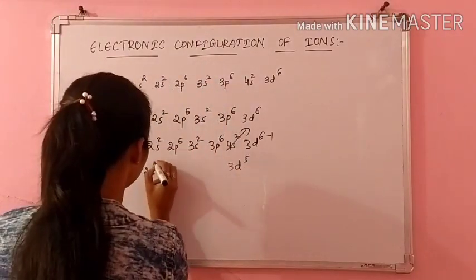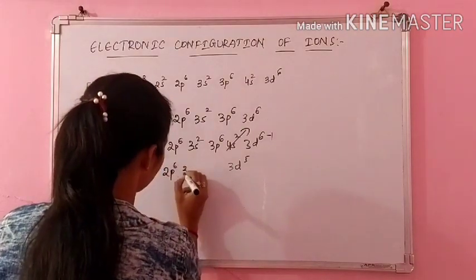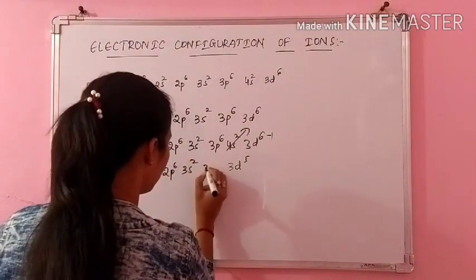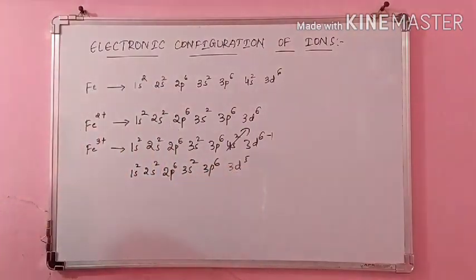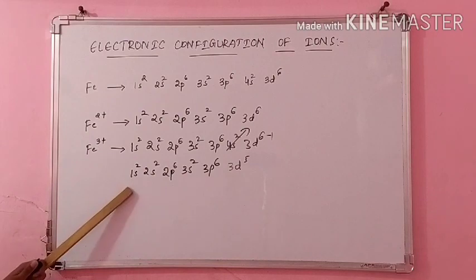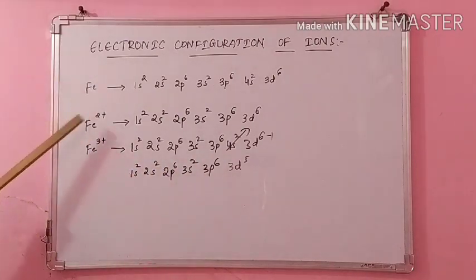So the configuration will be: 1S2, 2S2, 2P6, 3S2, 3P6, 3D5. This is the electronic configuration of Fe3+. Like this, we are going to do the ions.